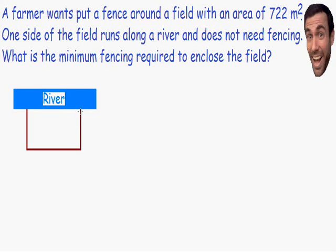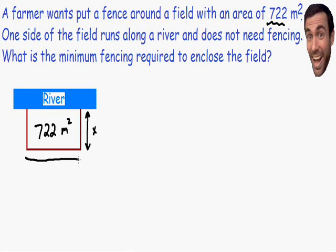Let's label everything in this picture. We know the area of the field is 722 square meters, so the area inside the field is equal to 722 meters squared. We don't know the length of the sides yet, so I'm going to label the right side of this field with a length of x, and the bottom side with a length of y. This is a rectangle, so if the right side has a length of x, the left side also has a length of x.